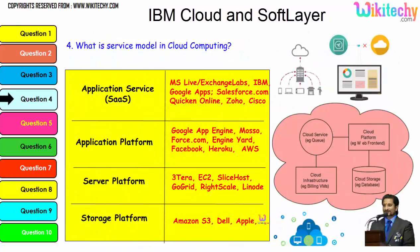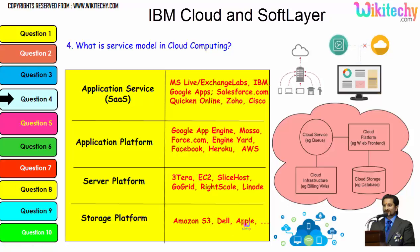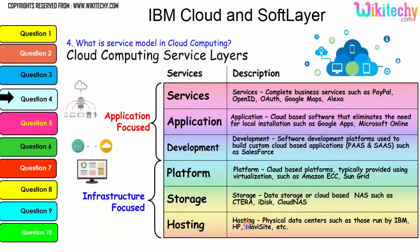Digging further into the service model, the application service, application platform, and server platform are key layers. The storage platform is provided by Amazon S3, Dell, and Apple. The important service layers are: services, application development, platform, storage, and hosting.